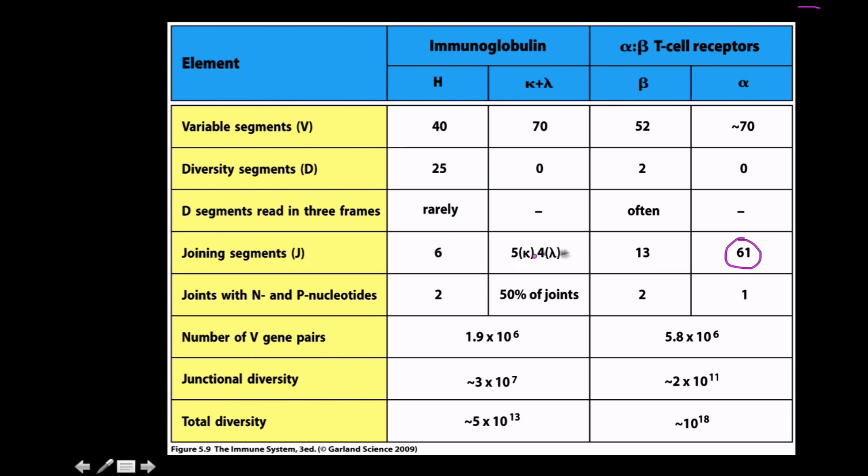61 joining segments, as opposed to five or four for kappa or lambda, for an average of four and a half. Individual joints with N and P nucleotides, so junctional diversity - two here, 50 percent of those of the kappa and lambda.